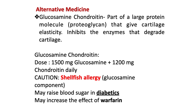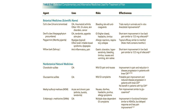Alternative medicines include glucosamine chondroitin, commonly given to people with osteoarthritis. It is part of a large protein molecule that gives cartilage elasticity, and it helps inhibit enzymes that degrade cartilage. The dose is usually 1,500 mg glucosamine plus 1,200 mg chondroitin daily. Caution: patients with shellfish allergy should be careful due to the glucosamine component. Additionally, glucosamine supplements may raise blood sugar in diabetics and may increase the effect of warfarin.